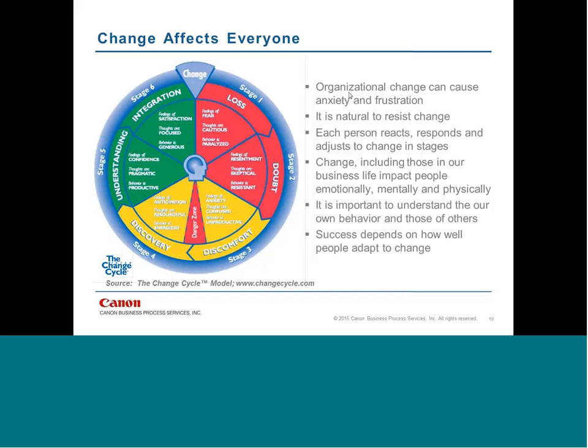There are models to help manage the emotions and reactions people go through. One I like to use is the change cycle model, which has six stages individuals can fall into during change — loss, doubt, discomfort, discovery, and others. They don't necessarily occur sequentially. The area I'd like to focus on is the danger zone, where people have come partially on board but still have anxiety about what the change will do to their job. This is where you can lose people and negativity can infiltrate the organization. If you can move people out of that stage, they become your change advocates.